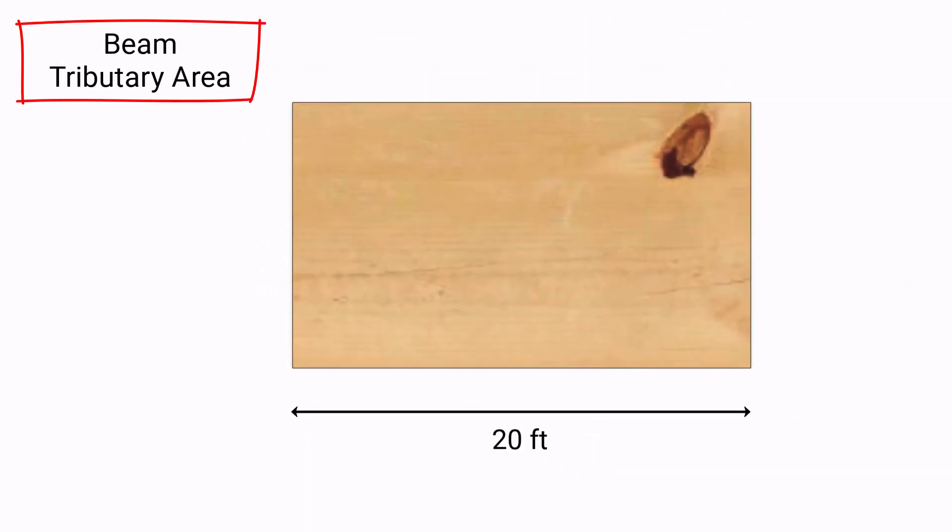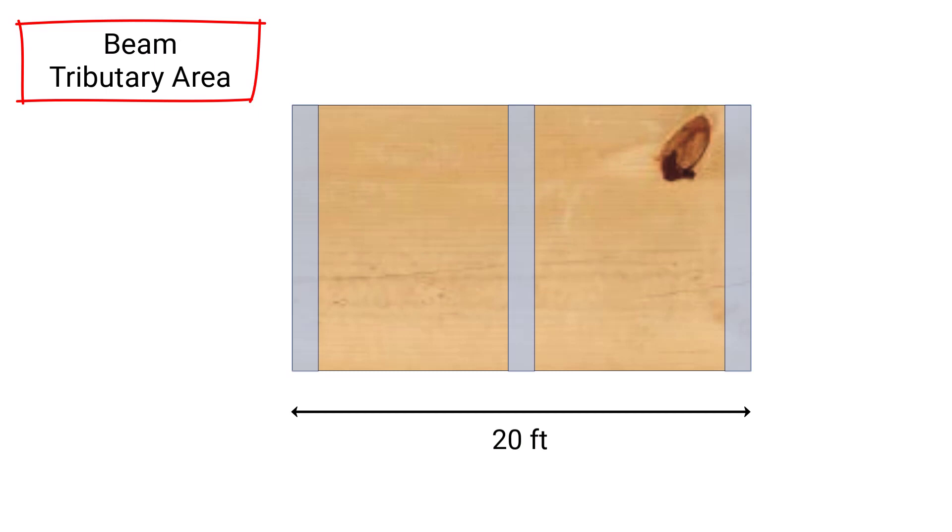Let's change our view and look at the top view and focus on the beams. So we have the left beam, the middle beam, and the right beam. The tributary area for the left beam will be the one shown in blue, and notice it has something called the tributary width of 5 feet.